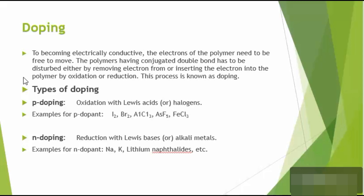The other type is N-doping. It is the creation of negative centers in the polymer backbone, done by a reduction process, so it is also called reductive doping. It is done with the help of Lewis bases and alkali metals. Examples of alkali metals used are sodium, potassium, lithium, etc. These are also called N-dopants.